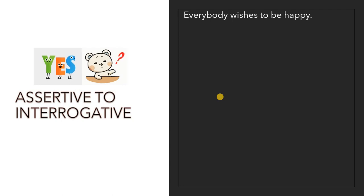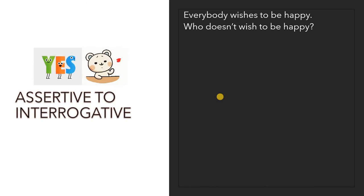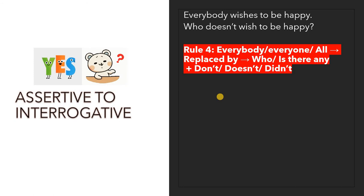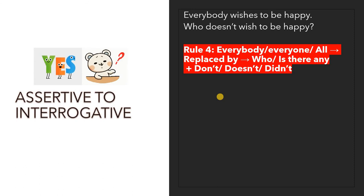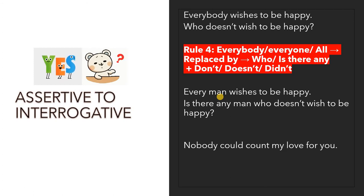Assertive to interrogative: 'Everybody wishes to be happy' becomes 'Who doesn't wish to be happy?' If transformed to negative it would be 'Nobody wishes to be unhappy,' but since it is interrogative, we form a question. 'Everybody,' 'everyone,' and 'all' are replaced by 'who' or 'is there any' plus the form of 'do.' For example: 'Is there any man who doesn't wish to be happy?'